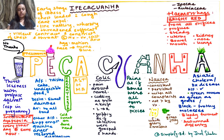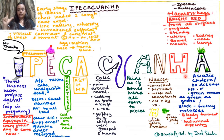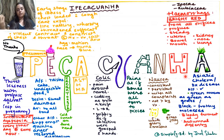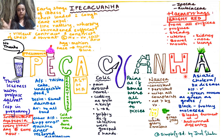H stands for hemorrhage. Ipecac is a hemorrhaging drug. There is bright red hemorrhage from all orifices — uterus, bowel, mouth, kidney, nose, or lungs — it is profuse and steady. Every complaint can be associated with hemorrhage, provided the color is bright red.